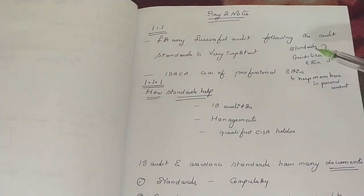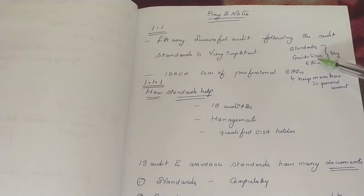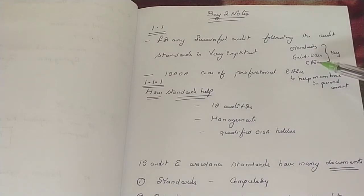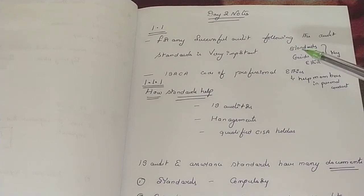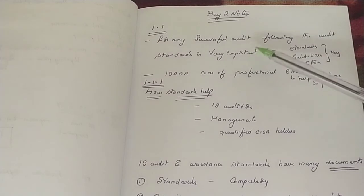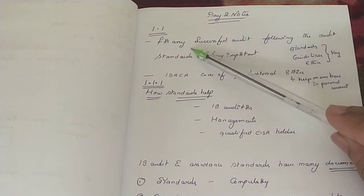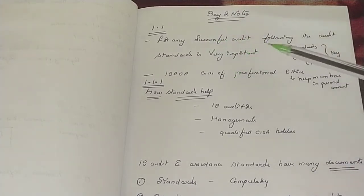Standards are the most compulsory ones. Guidelines help in applying the IS audit — that means they guide us in applying the standards to perform the IS audit. Ethics tells us how we need to be: we should be independent of the organization, we must be knowledgeable, skilled, and competent. Standards are mandatory — it is a requirement for IS audit, assurance, and reporting. So as far as section 1.1 is concerned — IS Audit Standards, Guidelines, and Professional Ethics — these are the key points.